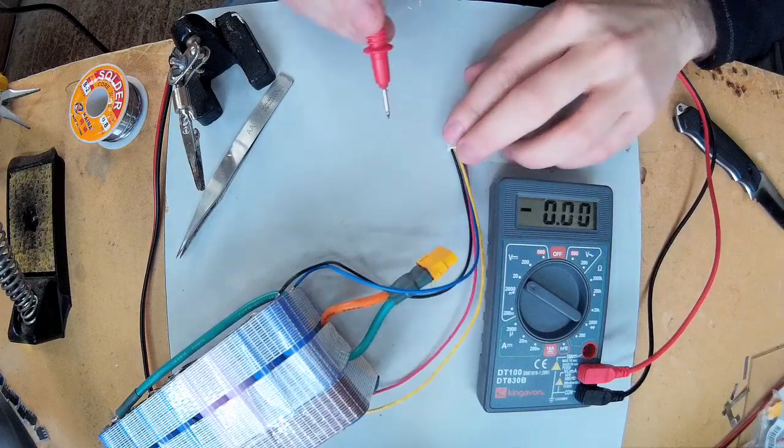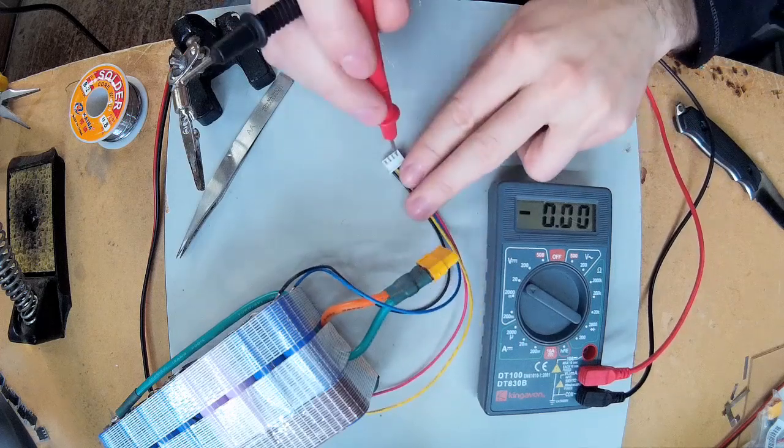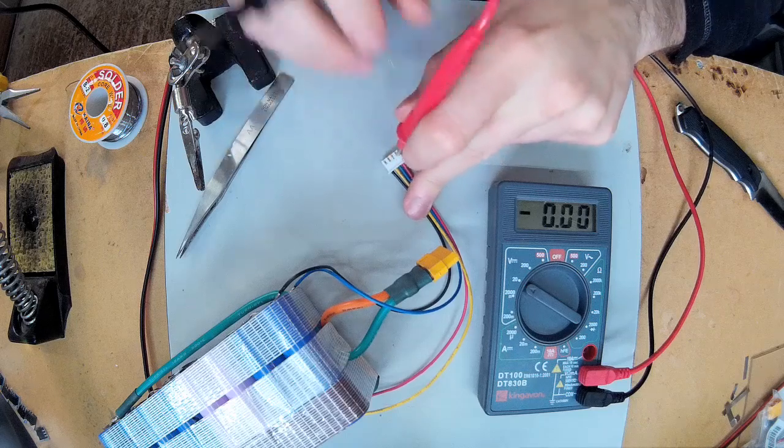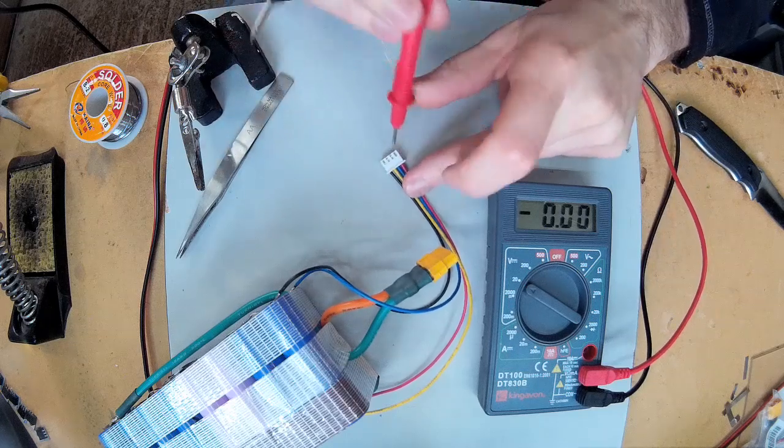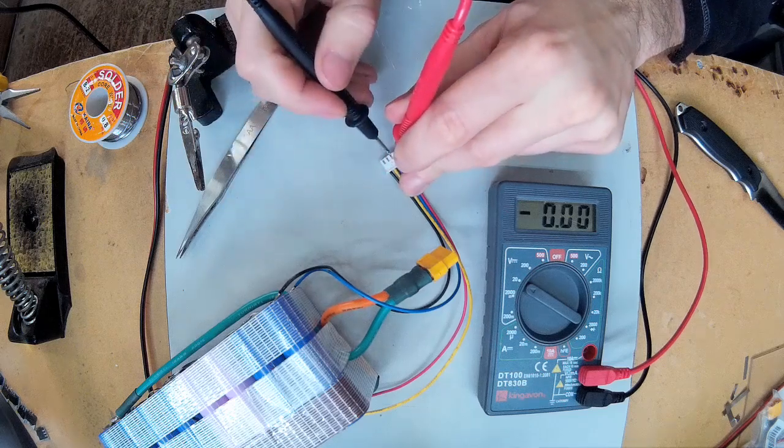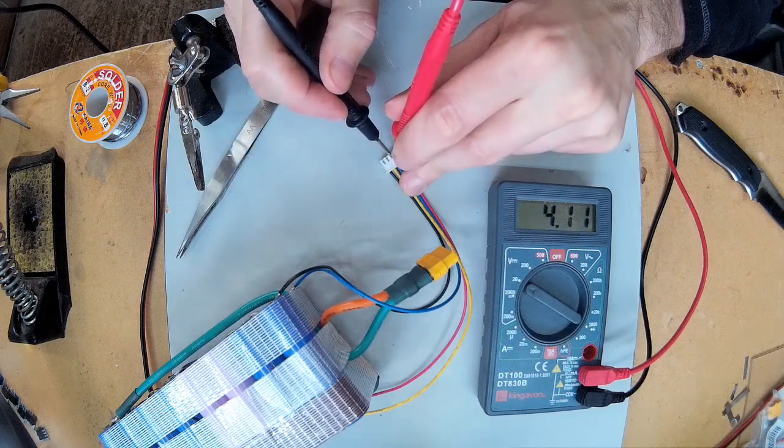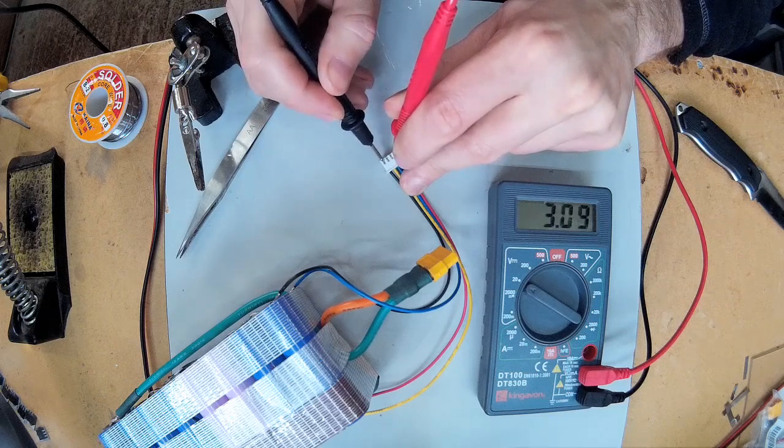Right, so I'm just going to make sure with the multimeter that I've got the wires connected the right way. Connect the probe to the positive red cable, and the first two you should have four volts, and then you'll have eight, and then twelve.